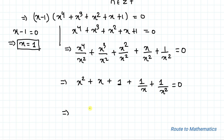In the next step let's arrange a bit. So we have x squared plus 1 by x squared, plus x plus 1 by x, plus 1, equals to 0.